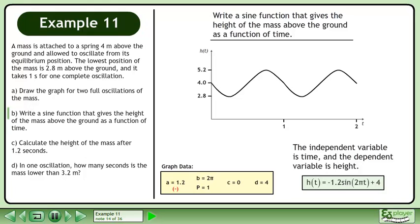The independent variable is time and the dependent variable is height. The function is h(t) equals negative 1.2 sine 2πt plus 4.